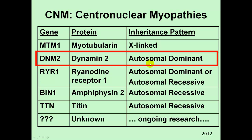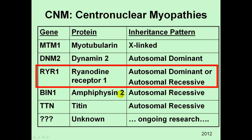The next one is the DNM2 gene, coding for a protein called Dynamin2. This causes an autosomal dominant type of inheritance pattern, so from either parent, if the child has even just one abnormal version of that gene, they can develop this Dynamin2 version of centronuclear myopathy. The RYR1 gene codes for a protein called ryanodine receptor 1. This is interesting in that it can have either an autosomal dominant or an autosomal recessive inheritance pattern — both have been described.